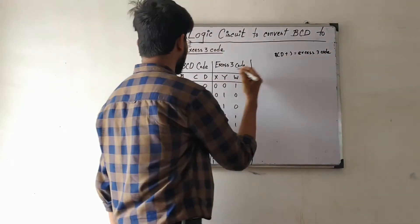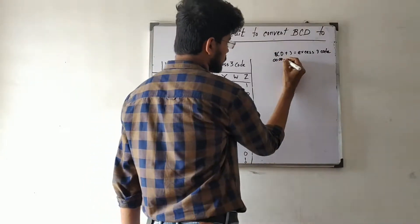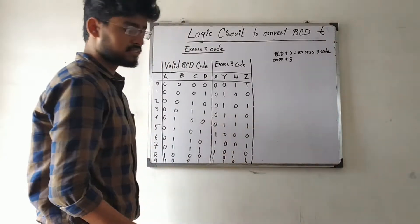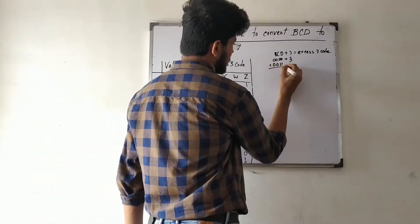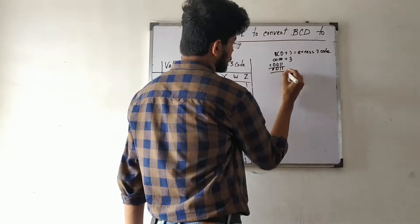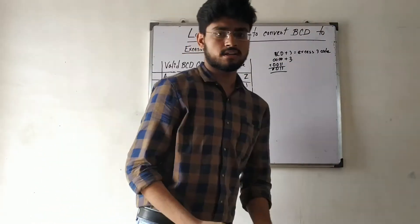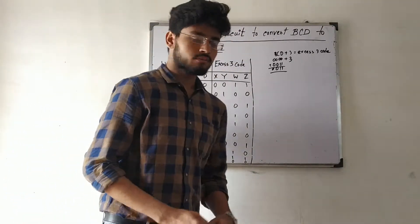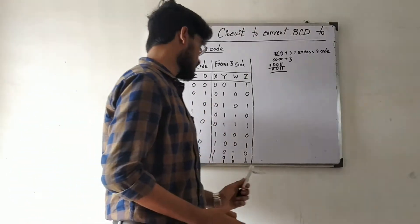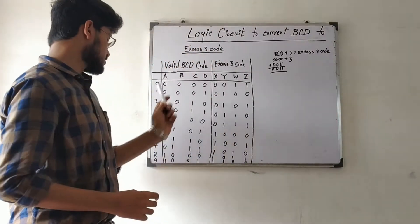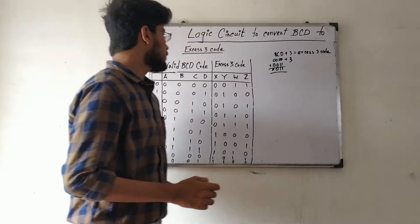So if a BCD code is 0000, then its Excess-3 code is 0000 plus 3. In BCD, 3 means 0011, so the Excess-3 code of 0000 BCD is 0011. In this way, we take the Excess-3 code of 0 to 9. This is the BCD code of 0 to 9 and this is the Excess-3 code of 0 to 9.